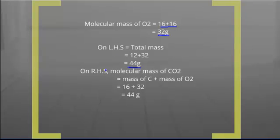Now, let us move on to the right hand side of the reaction. On the right hand side, we have carbon dioxide. The molecular mass of carbon dioxide is the sum of the mass of individual atoms.